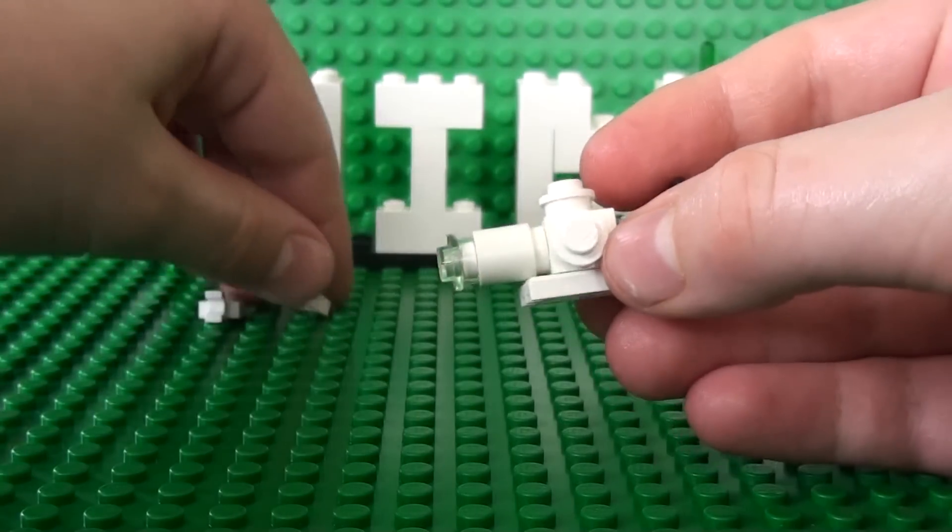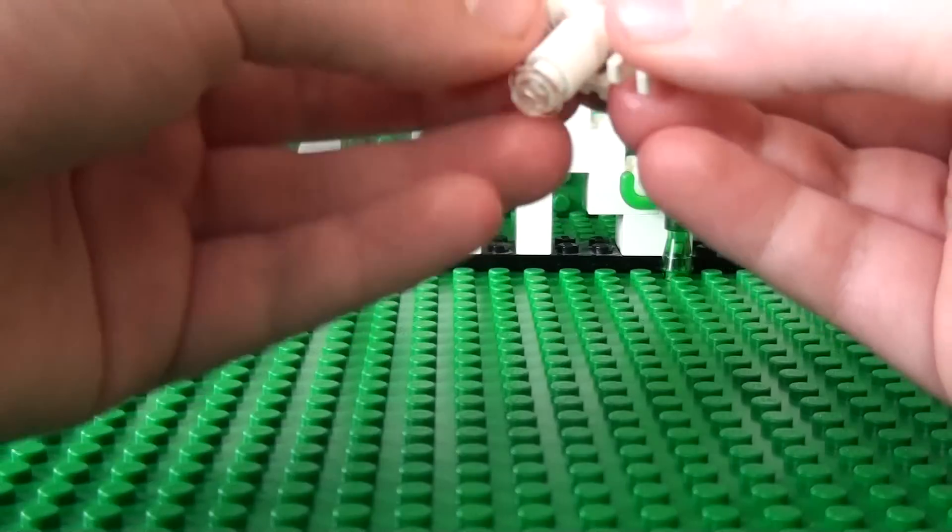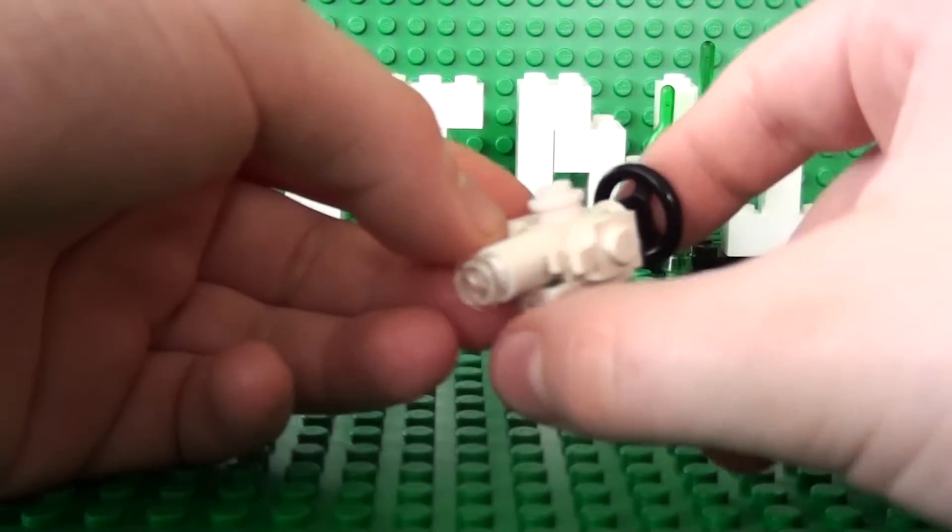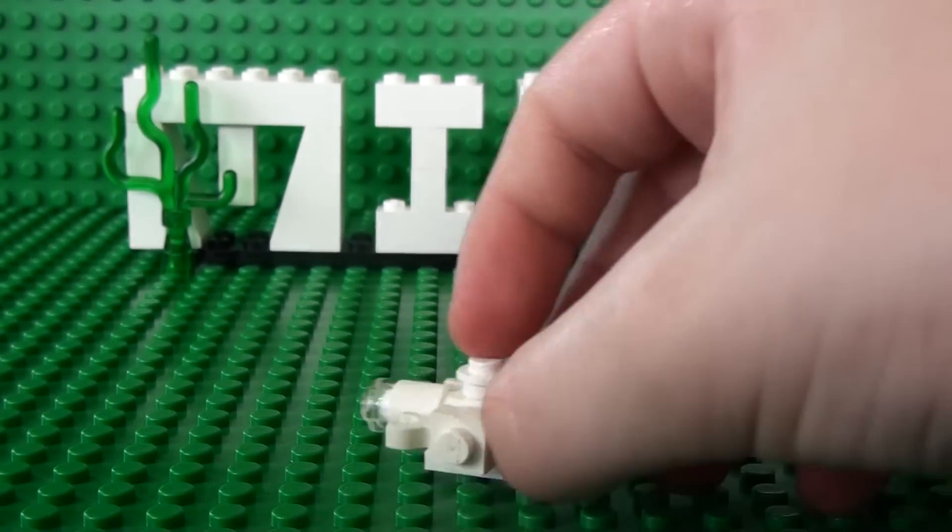Lastly you take the two 1x1s with clips and place them here. That is how to build a mini Lego submarine.